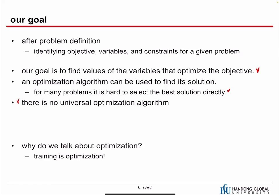Sometimes SGD is the best, sometimes ADAM, sometimes RMSprop — we don't know. You have to try many optimizers at the beginning of your experiments. Once you know which optimizer is better for your problem, you can use that optimizer to train your networks. And why do we talk about optimization? As I said, the training process is all about optimization, so we have to talk about it.